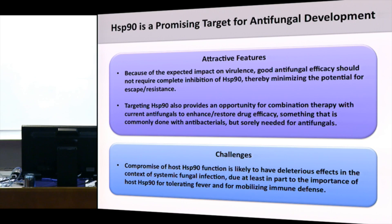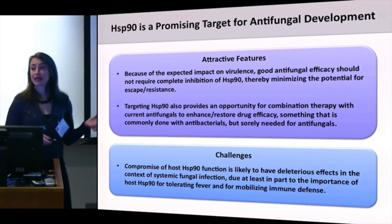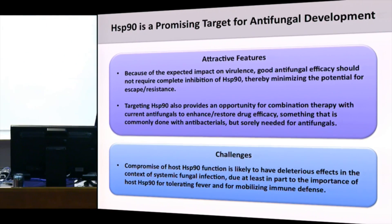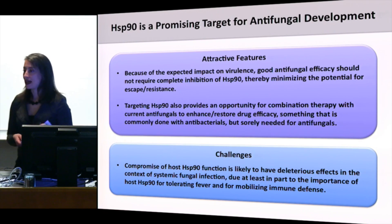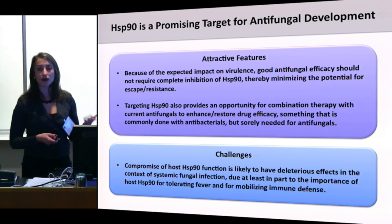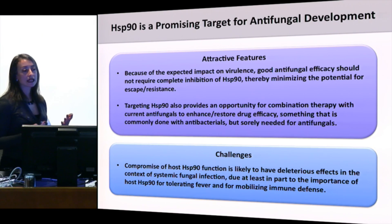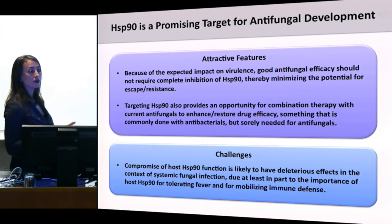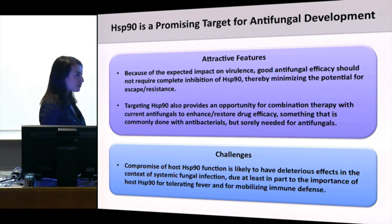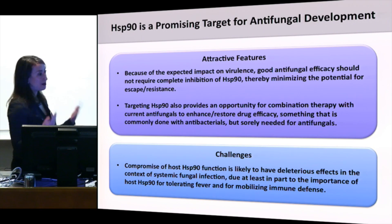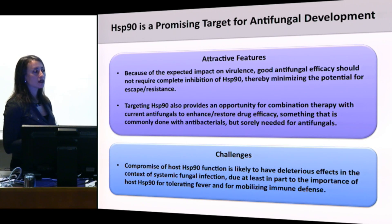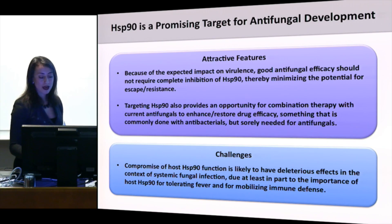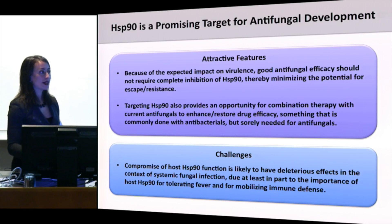The major challenge is that Hsp90 is also very important in the host — it regulates calcineurin, which is important for immune responses. Hsp90 is important for surviving stresses associated with fever during infection and mounting immune responses. So we really would need to develop fungal-selective agents in order to exploit this therapeutically. Is that feasible? That's the next frontier.